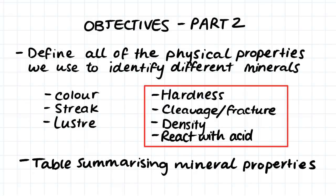Hi guys, this is the second video of 3 in which we will have a look at defining the physical properties we use to identify different minerals. In this video we will have a look at the physical properties of hardness, cleavage and fracture, the density of minerals, and whether the mineral reacts with acid and what this can tell us about the mineral. In the next video we'll have a look at a table summarizing mineral properties and a flowchart which will help us to understand the path we should take in order to identify different minerals.